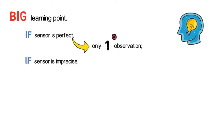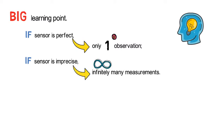If your sensor is perfect, you need one observation only. Yet if your sensor is imprecise, you need infinitely many measurements.